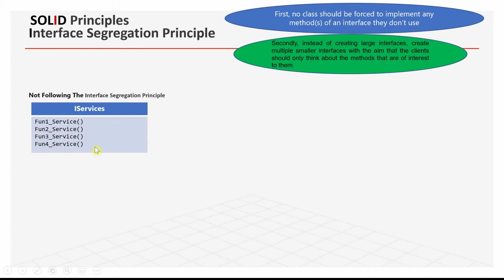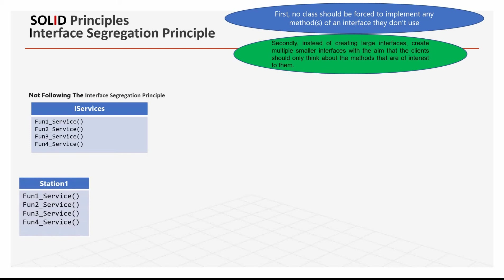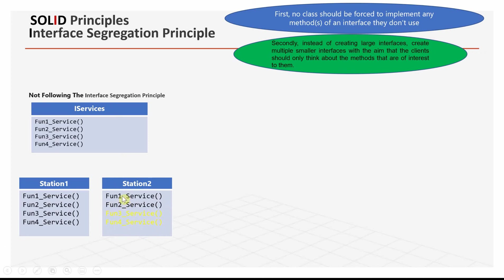In this interface, we have function 1 service, function 2, function 4, and function 3 service. We have this one, and this one needs to use all of them — both elements and function service from the iService interface. But this one just needs to use two of them: it needs to use function 1 and function 2.